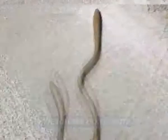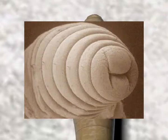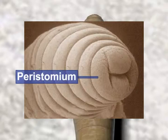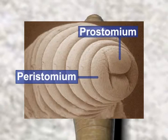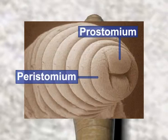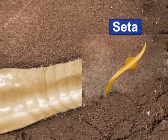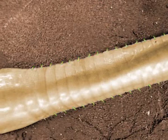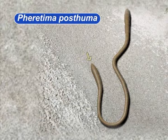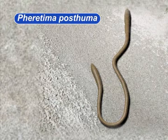The first segment is known as the peristomium. It has a crescent-shaped opening called the mouth. A small sensory lobe called prostomium projects from its dorsal side. The prostomium helps it in sensing the surroundings. F-shaped chitinous structures called setae are present on the ventral body surface. These setae are used for locomotion. The posterior end of the earthworm bears an anus through which the earthworm excretes waste material.